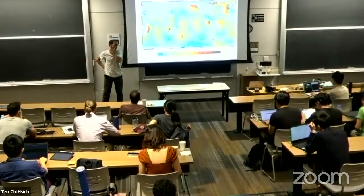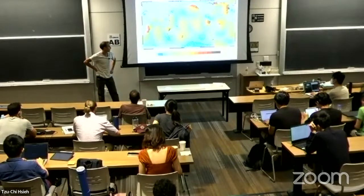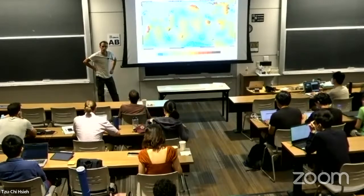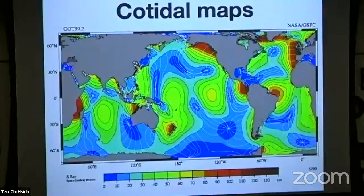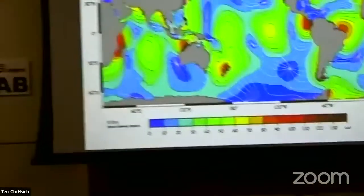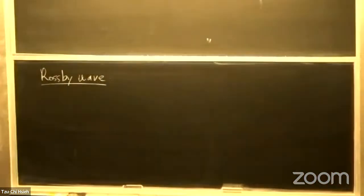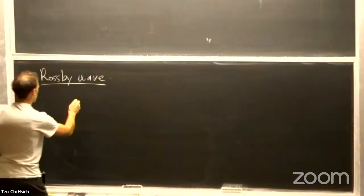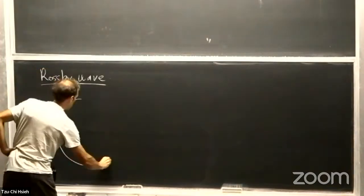Before presenting coastal waves, I would like to make a short parenthesis on Rossby waves. I spoke about Rossby waves very rapidly when we showed the Matsuno spectrum, so I would like to make a short connection with mid-latitude Rossby waves that you heard about last week.